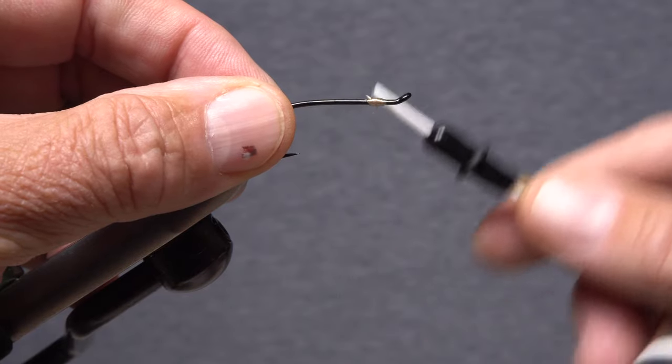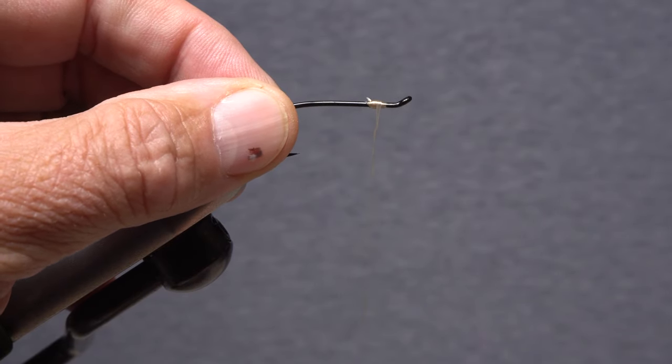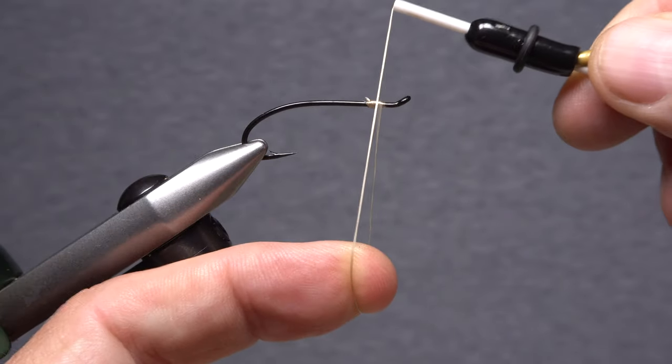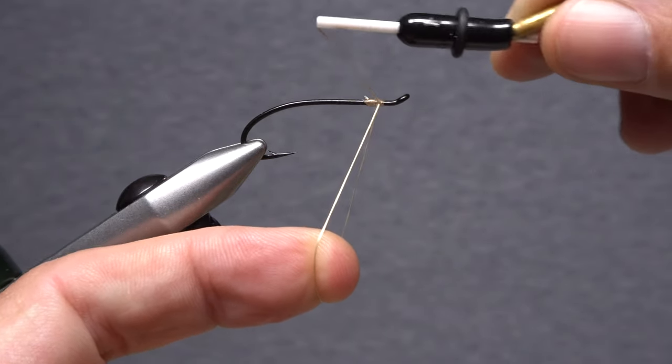To reverse the thread wrap direction back to normal, once again pull down on your tying thread then double it over to form a loop. But this time, start taking normal wraps around the shank.